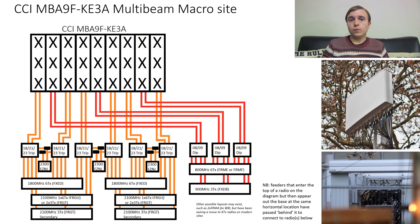With T-splitters, the 2300 MHz radio output goes to a T-splitter and effectively gets split into two to serve two beams. And all in all, the 1800, the 2100 and the 2300 all get fed into triplexers which combine them all together and then send them up to the antennas.